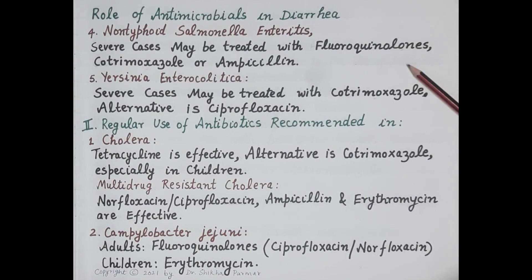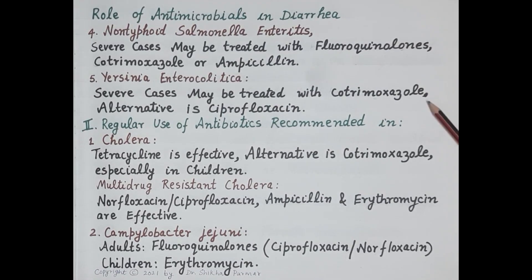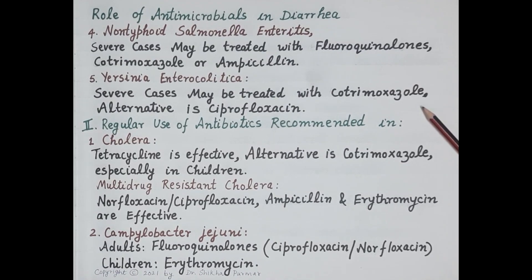The next infection is non-typhoid Salmonella enteritis. This is again a self-limiting diarrhea, but severe cases may be treated with fluoroquinolones, cotrimoxazole, or ampicillin. Then, diarrhea caused by Yersinia enterocolitica — again, severe cases may be treated with cotrimoxazole, with ciprofloxacin as an alternative.